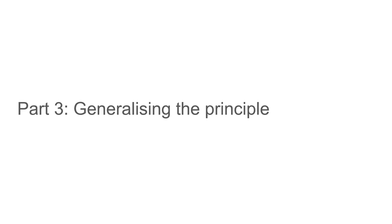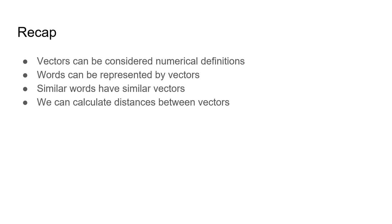The vectors are abstracted away from humans — we don't see them, but under the hood that's what's happening. Recap: vectors can be considered numerical definitions. Words can be represented by vectors; similar words have similar vectors. Most importantly, we can calculate distance between vectors. If we have a man vector and a man vector, the distance is zero. A man vector and a woman vector — the distance is small. A woman vector and an 'end' vector — the distance is large.